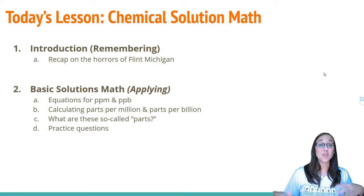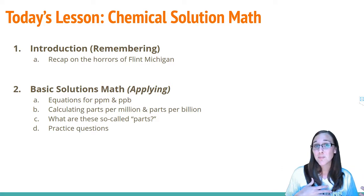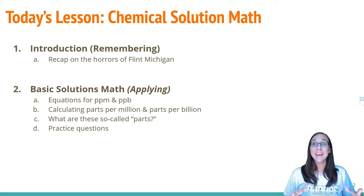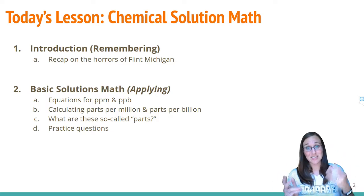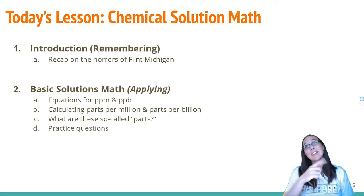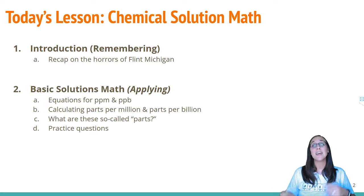This is going to be in relation to the horrors of Flint, Michigan. We've been talking a lot about water contamination in terms of my own home water that I tested here in Portsmouth, Virginia, in addition to the new things coming up in the news about Newark, New Jersey also being a problem with lead contamination. So we're going to recap on that briefly first, and then we're going to dive right in headfirst into equations with parts per million and parts per billion, and then practice some questions along the way.